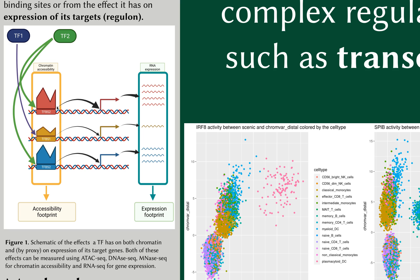In a very simplistic model, we can view gene expression as being regulated by a set of transcription factors that can recognize and bind specific regulatory elements in the genome, and through binding to these regulatory elements, a transcription factor can affect the expression of its target genes, or its regulon.